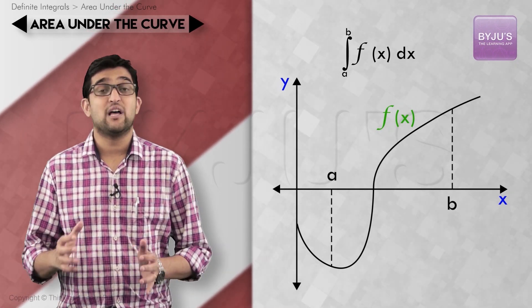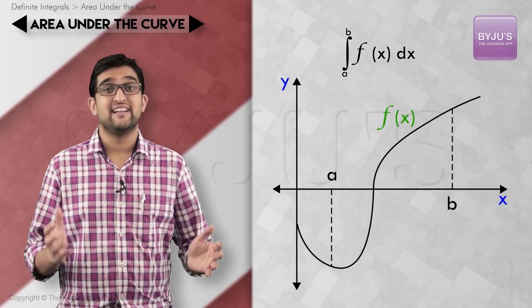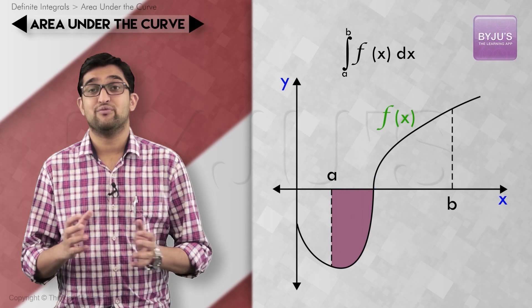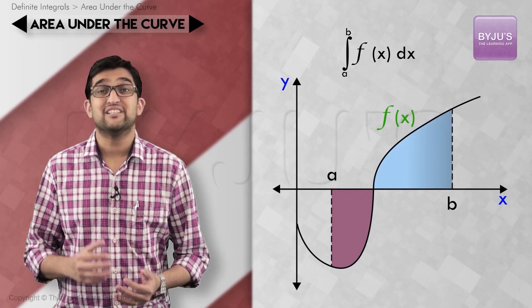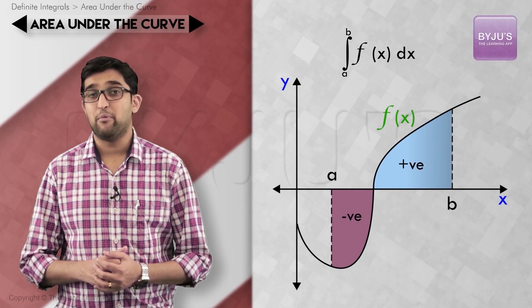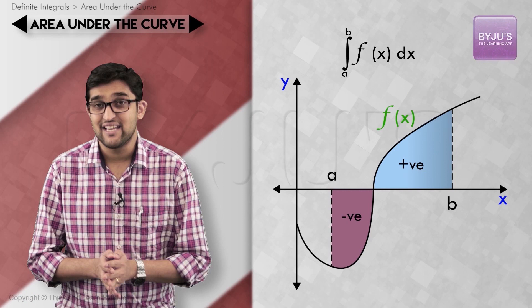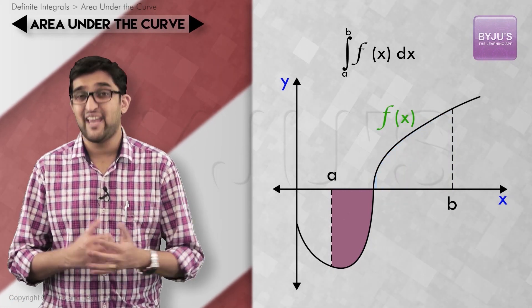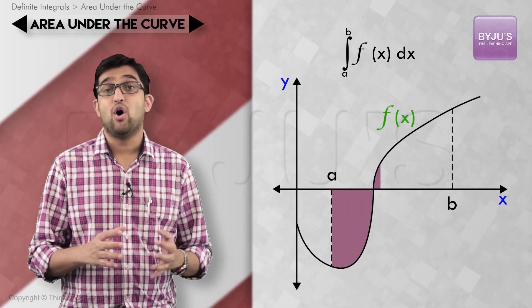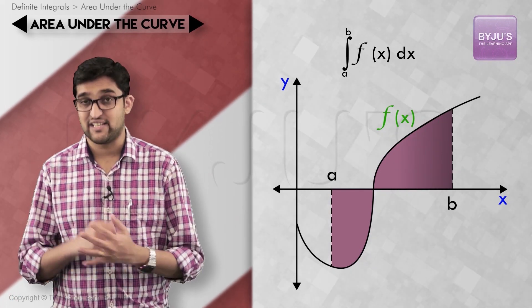This phrase, the algebraic sum of area, is quite curious. We saw in certain instances that this algebraic sum of area can go to zero because the area can be positive or negative. But when we talk about area included between the curve and x-axis, it's not the algebraic sum of area that we are talking about. It's the sum of all shaded portions between the plot and the x-axis.